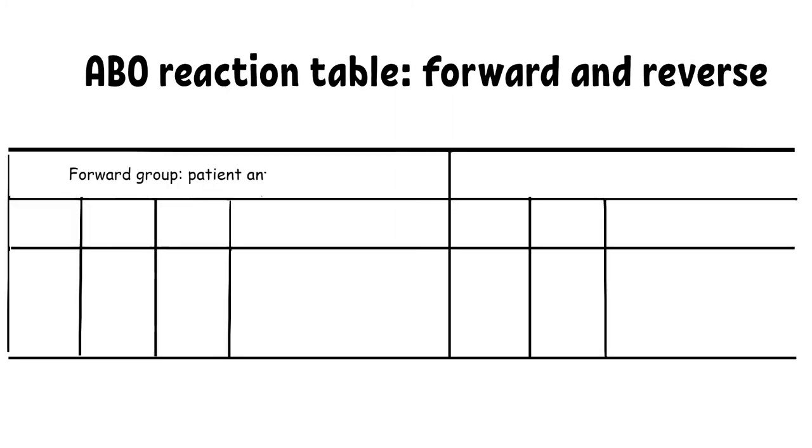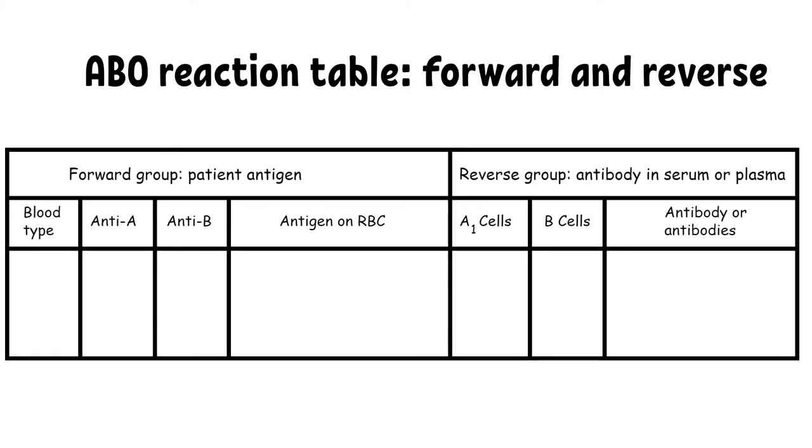Blood group O, this person does not have N-acetyl-D-galactosamine sugar to convert H antigen to A antigen. Since the ABO antibodies are naturally occurring, which means a group O person will have anti-A and anti-B.